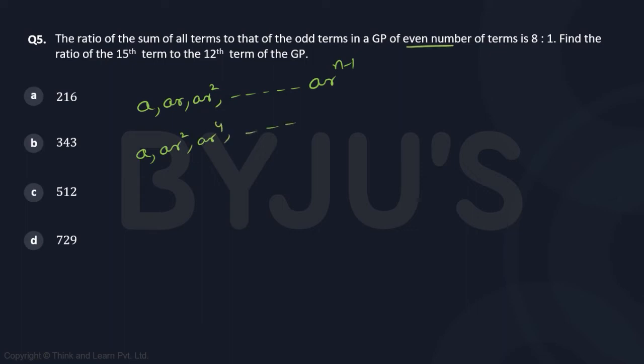Now, remember there are totally even number of terms, which means the last term will be an even term. So for the odd terms, the last term will be ar^(n-2).